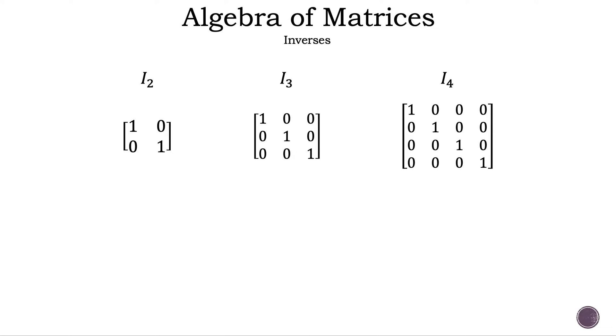Let's discuss the identity matrix. The principal diagonal is full of ones and the rest of the numbers are zeros. We can use notation to write it as i sub the dimensions. So for example, if we have an identity matrix that is 2x2, we call it i sub 2.